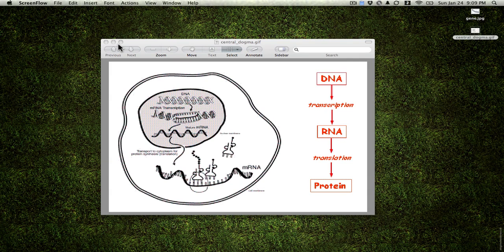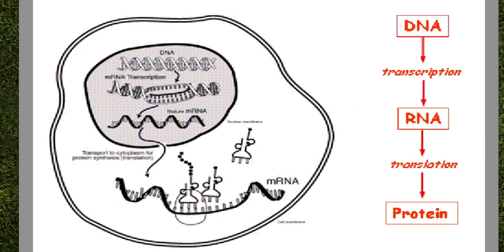Hey everybody, this is Mr. Glass, and this is the first of what may be many screencasts just to show you some of the main ideas and stuff that we're talking about. The first thing we're going to talk about is the process of protein synthesis, and protein synthesis is going from DNA to RNA to a polypeptide.